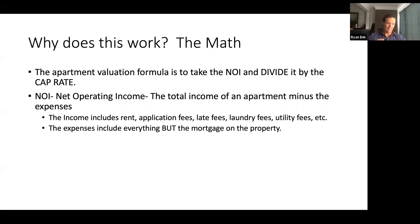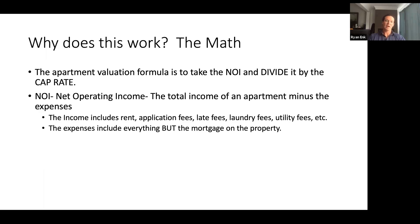The income includes your rent, your application fees, your late fees, your laundry fees, your utility fees, whatever you're doing to bring in income. If you've got a Coke machine out by the pool, the income from that — all of that is included in your income.